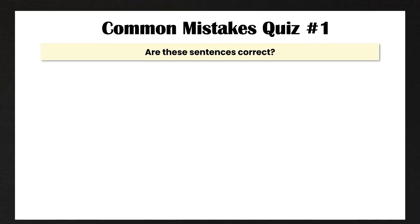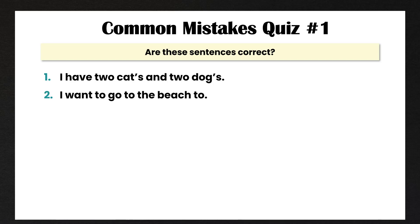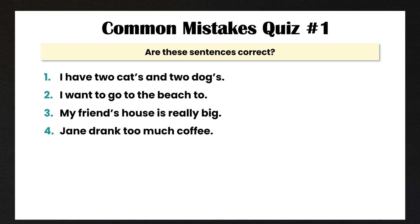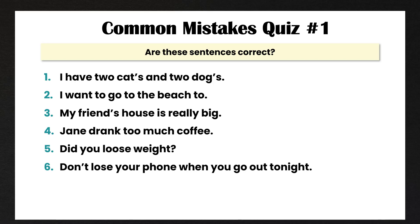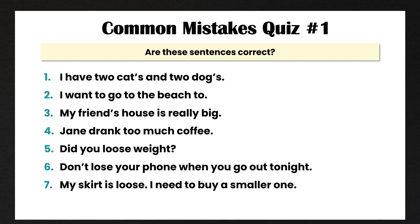Okay, so now we're going to do a quiz. Are these sentences correct? And if they're not, you have to correct them. Number one: I have two cat's and two dog's. Number two: I want to go to the beach to. Number three: my friend's house is really big. Number four: Jane drank too much coffee. Number five: did you loose weight? Number six: don't lose your phone when you go out tonight. Number seven: my skirt is loose, I need to buy a smaller one. Number eight: I am to tired to go to the party.